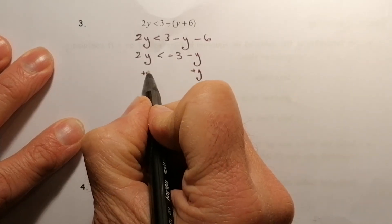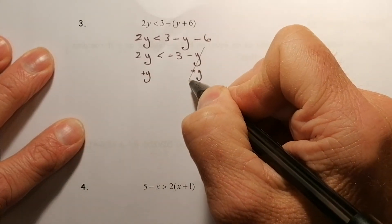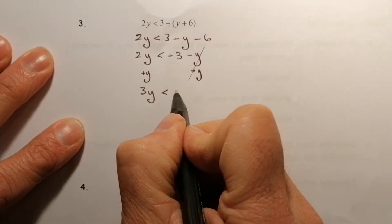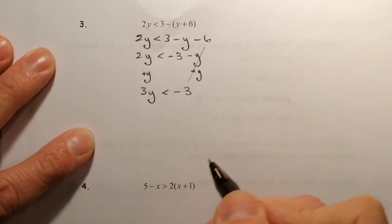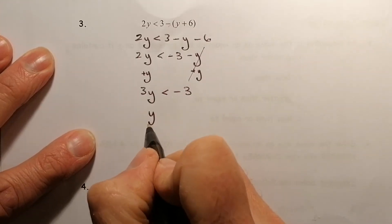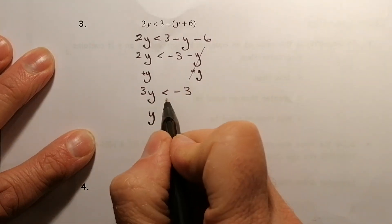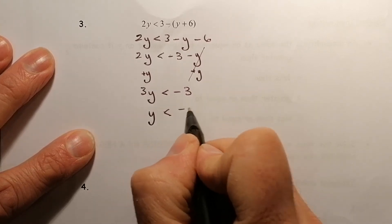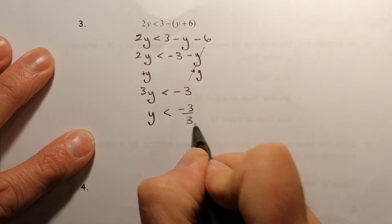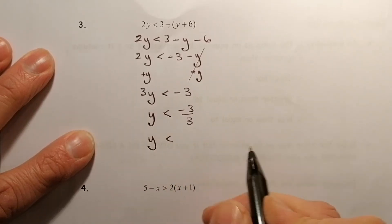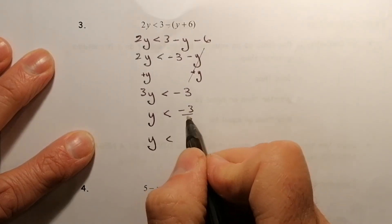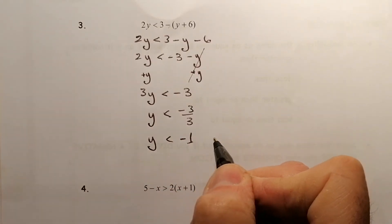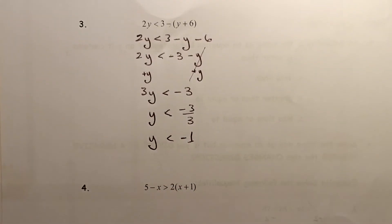Adding y to both sides eliminates the minus y on the right, leaving me with 3y is less than minus 3. I then divide by 3 — because it's a positive number I'm dividing by, I leave the sign as it is. With only one negative sign the answer is negative: 3 divided by 3 is 1, so y is less than minus 1.